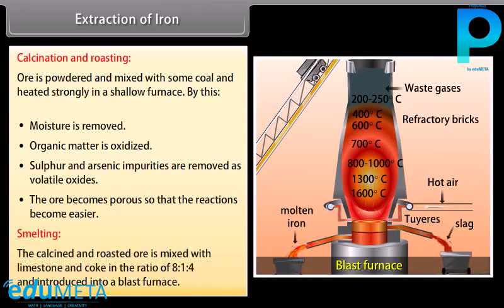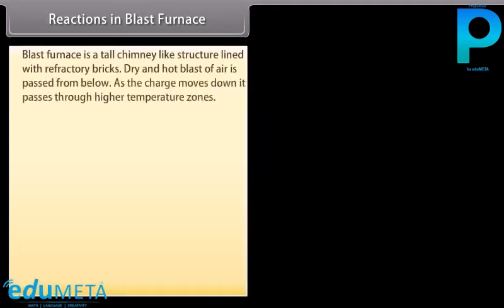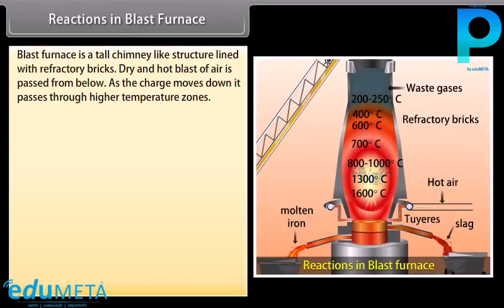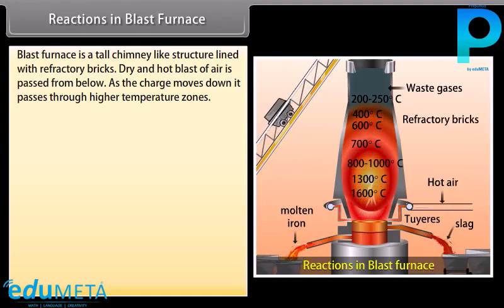Smelting: The calcined and roasted ore is mixed with limestone and coke in the ratio of 8:1:4 and introduced into a blast furnace. The blast furnace is a tall chimney-like structure lined with refractory bricks. A dry and hot blast of air is passed from below. As the charge moves down, it passes through higher temperature zones where different chemical changes take place.